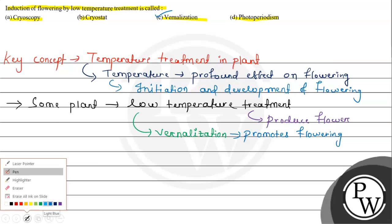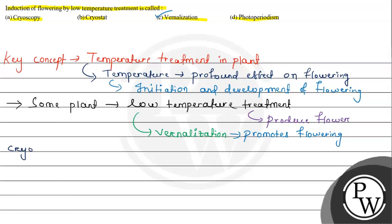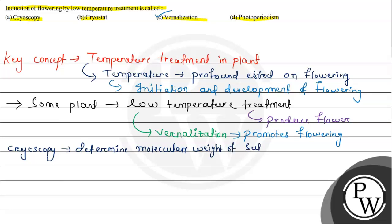Now let's talk about why the other options are incorrect. The first option is cryoscopy. Cryoscopy is the process of determining the molecular weight of any substance by dissolving it — it is a process to determine the molecular weight of substances. So it cannot be the answer.